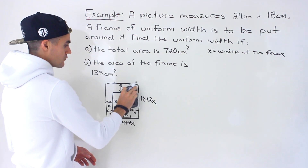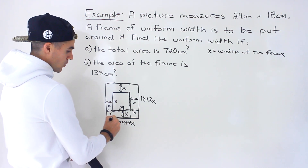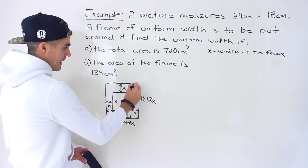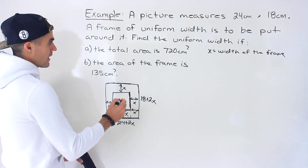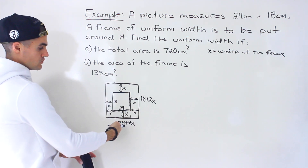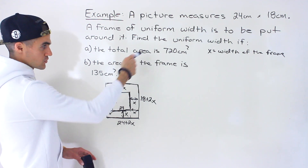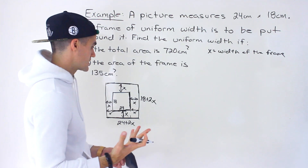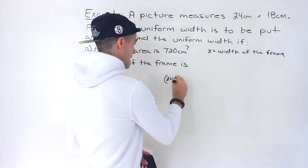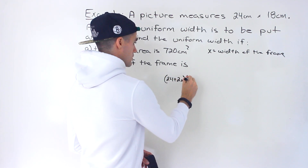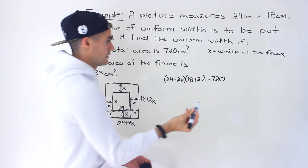That's the first step — coming up with expressions for the total length and total width. For part A, it's straightforward: length times width equals the total area, and we're told the total area is 720 centimeters squared. So we set (24 + 2x)(18 + 2x) = 720.